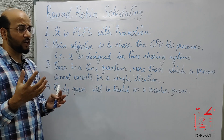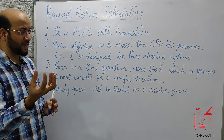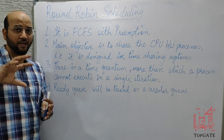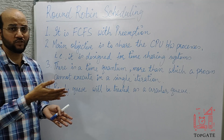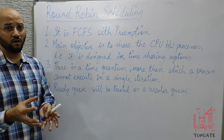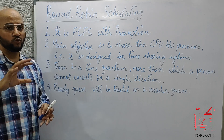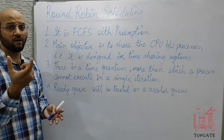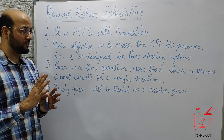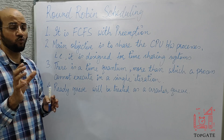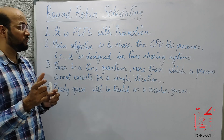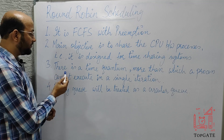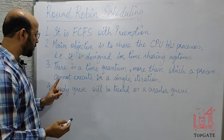In Round Robin, we execute one process for a time quantum duration, then switch to the next process. That process executes for its time quantum, then moves to the waiting state, and a new process is taken from the ready queue. Every process executes for a limited duration — that limit is the time quantum.